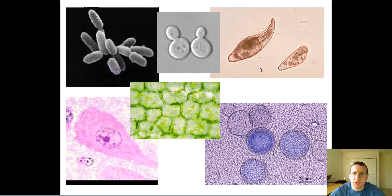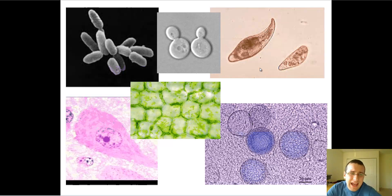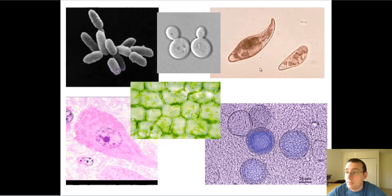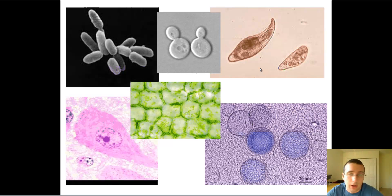How would you classify the difference between the cells that you're seeing? Can you actually spot the major differences between them, any structures that jump to you? When I look at these cells, I actually see the differences between them. I know that one of them is an archaea, one of them is going to be a true bacteria or eubacteria, another is a fungus cell, another is a plant cell, another is an animal cell, and another is an example of a protozoa.